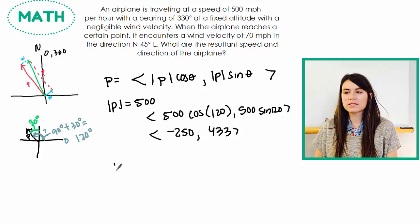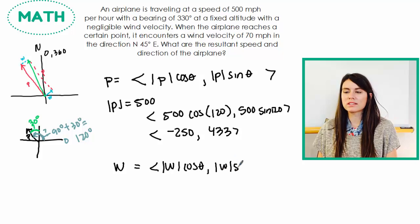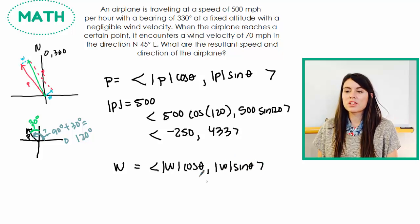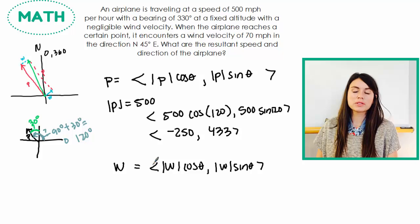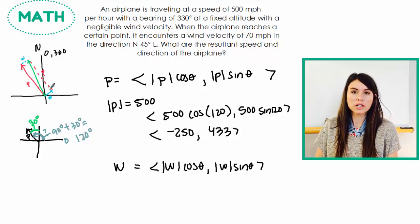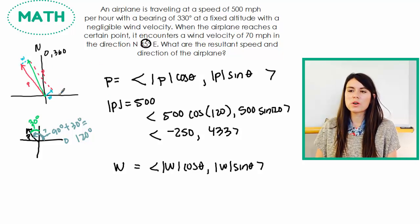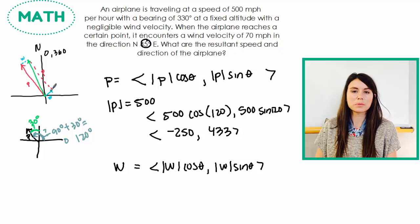Now we have to find the components of the wind. So the wind vector has the same formula. I need to find the magnitude of the wind times cosine theta, magnitude of the wind, sine theta. So the great thing about the wind vector is that it is in the first quadrant and we know it's 45 degrees right here.